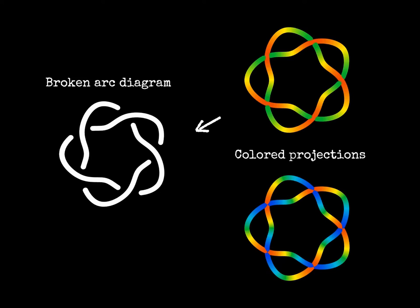To turn a colored projection into a broken arc diagram, we need to break the lower arc near its crossing, then we can forget the color. Vice versa we color the string yellow and red, and then join the broken arcs coloring them green or blue.